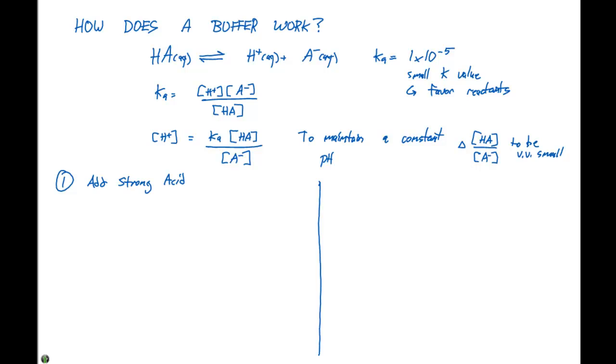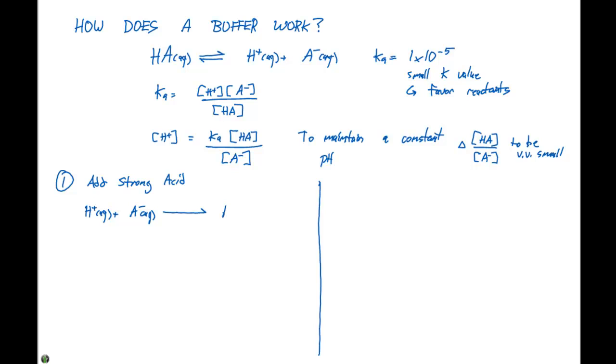So if we increase our particular H⁺, equilibrium can shift over to the left. So if we have H⁺ plus A⁻, what's gonna happen is that's gonna shift forward to form HA ions.